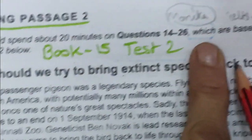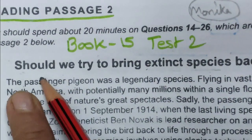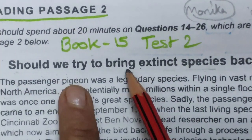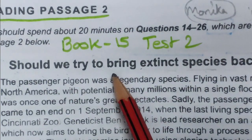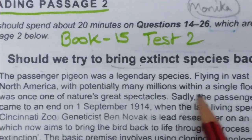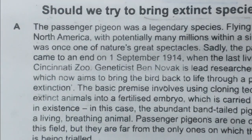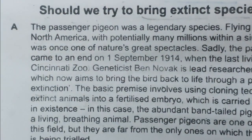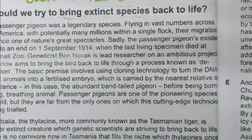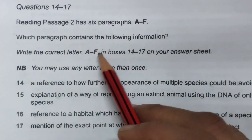Hello everyone, I am Monica from the IELTS 9 channel. In this video I am going to do this reading — the reading is named 'Should We Try to Bring Extinct Species Back to Life?' Whenever you are reading the title of a reading passage, you should always try to paint some picture about the topic. This reading passage has been divided into small paragraphs — A through F — six paragraphs in total. Let's move on to the types of questions we have in this reading passage.